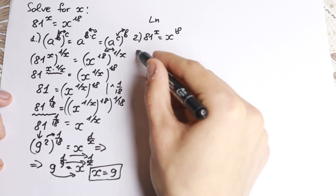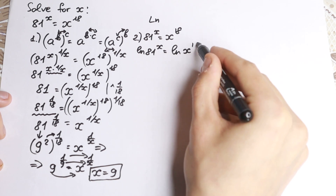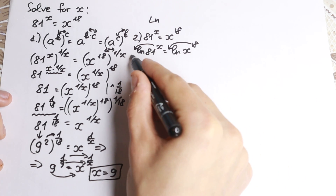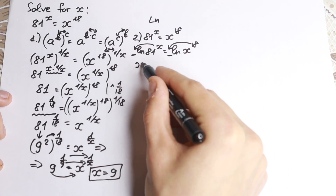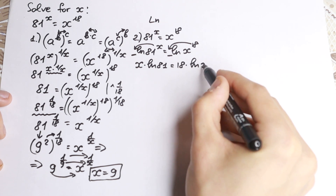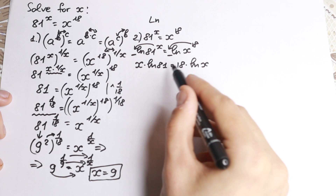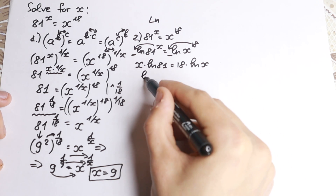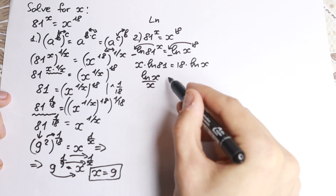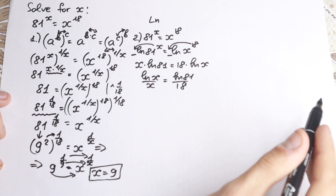We take natural log of both sides: natural log of 81 to the x equals natural log of x to the power 18. The exponent comes down as a product, so we have x times natural log 81 equals 18 times natural log x. Let's simplify step by step. If we divide both sides by x and by 18, we get natural log x over x equals natural log 81 over 18.